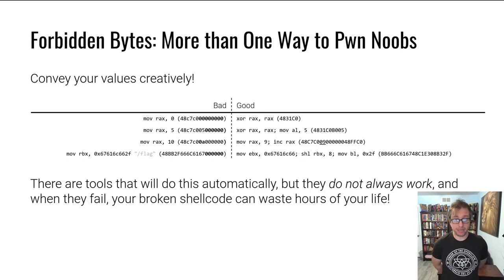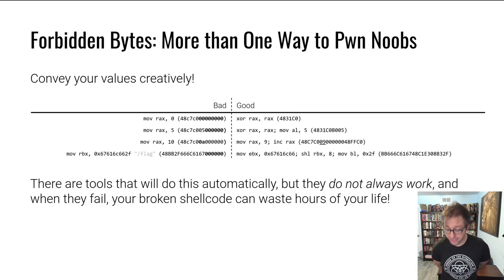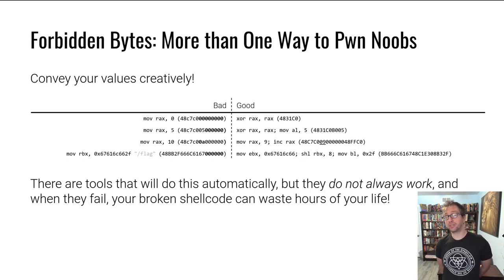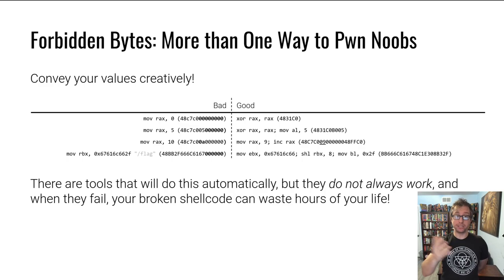There are tools that will do this automatically for you. I would recommend — especially as you learn shellcode and especially in this homework — don't use them. They don't always work, and when they don't, it's not clear whether your shellcode is incorrect or the tool is incorrect. You end up spending insane amounts of time debugging. Just write your shellcode by hand and figure out how to bypass whatever bytes you can't use.